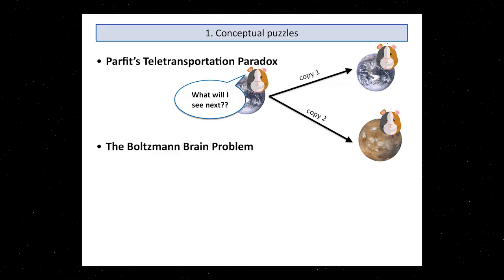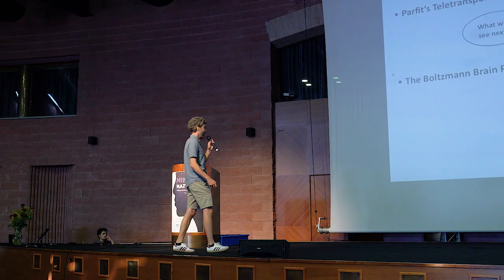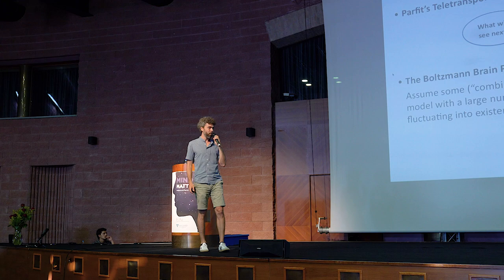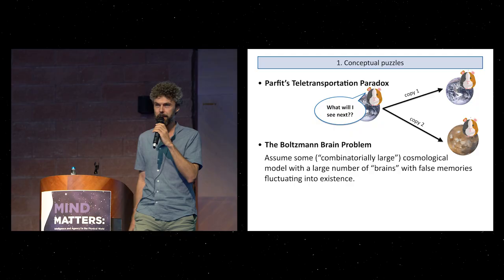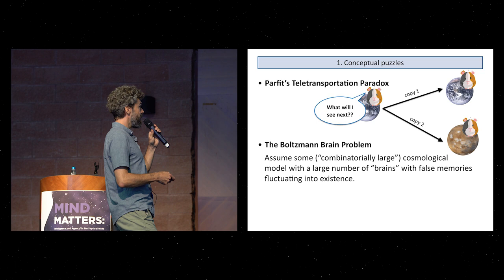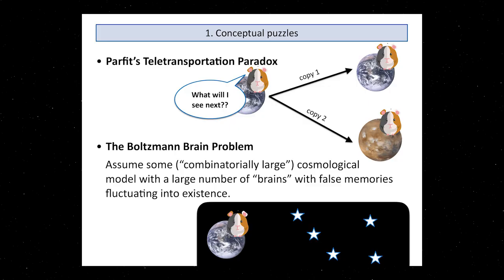Now there's a second version, a structurally similar puzzle that appeared in physics, the Boltzmann brain problem. Again, suppose that the universe is very large. Assume some cosmological model where because it's combinatorially large, there will be really many fluctuations happening. You're here, the observer, and due to the sheer size of the universe and fluctuations from quantum mechanics, thermodynamics, there are sometimes fluctuations that are you.